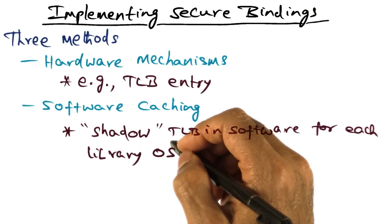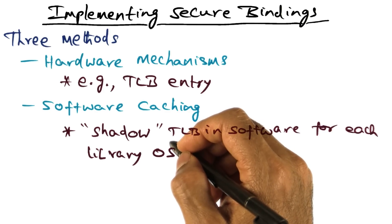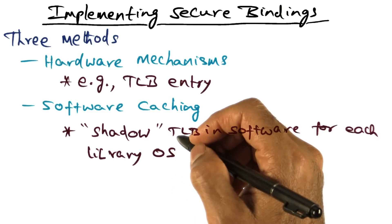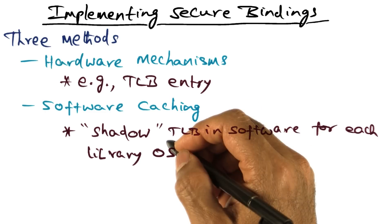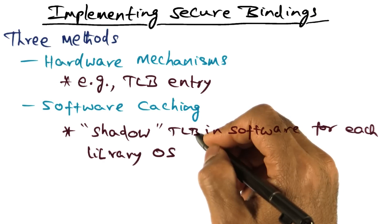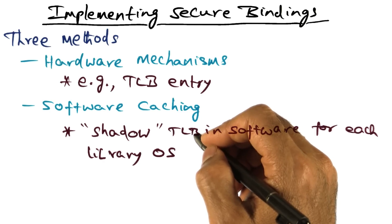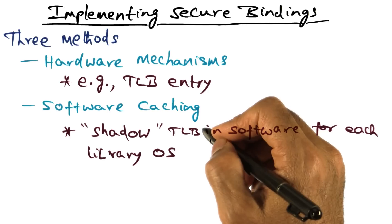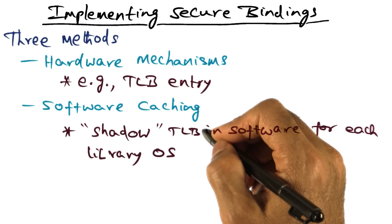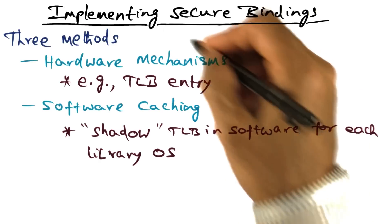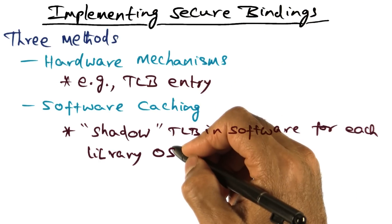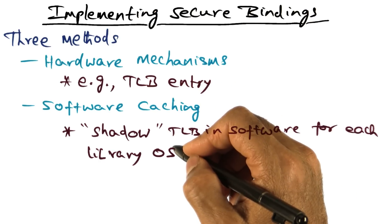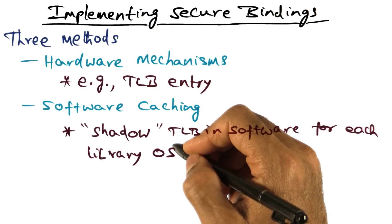Similarly, exo-kernel loads the software TLB of the library operating system it is switching to into the hardware TLB. We will talk about this mechanism in much more detail shortly. This is the second mechanism that exists in exo-kernel for establishing a secure binding between a library operating system and the hardware.